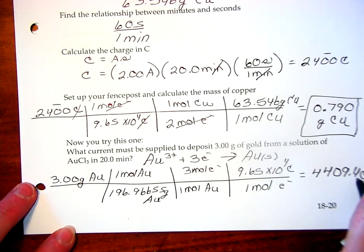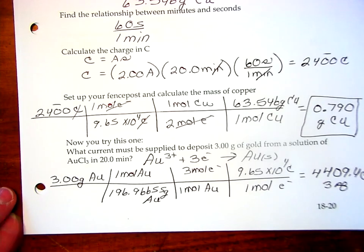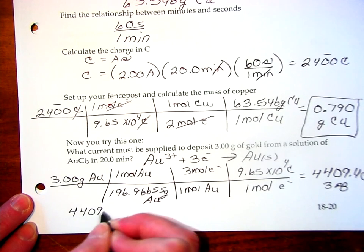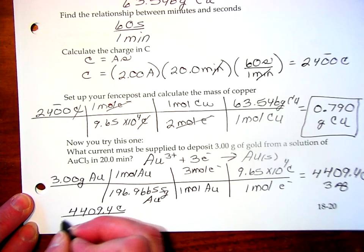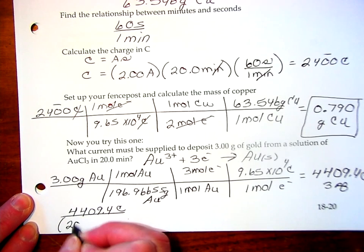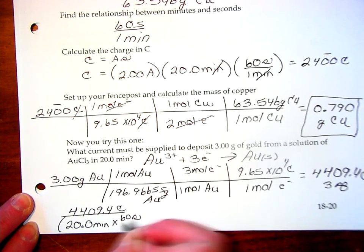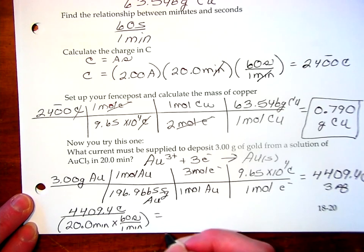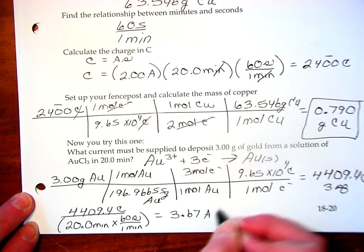So, we have 4,409.4 coulombs. I can only keep 3 sig figs there. So, I'm going to round at the end to my 3 sig figs. So, my 4,409.4 coulombs divided by my time, 20.0 minutes. I need it in seconds. So, I know 60 seconds is 1 minute.